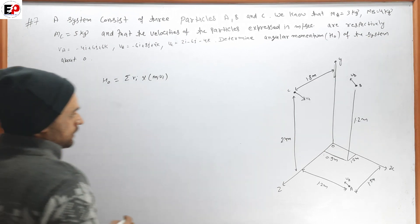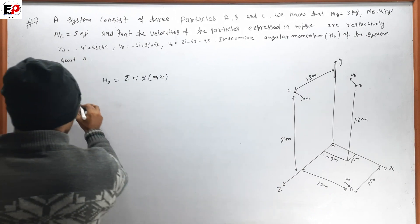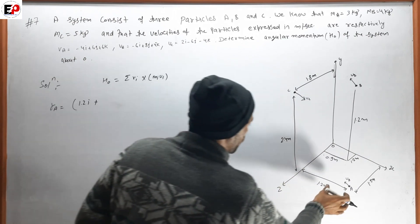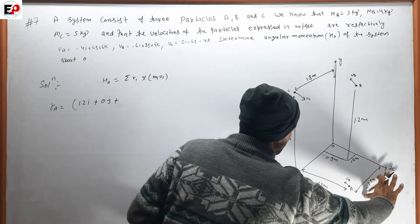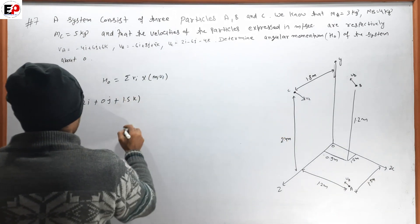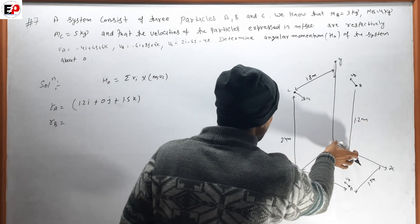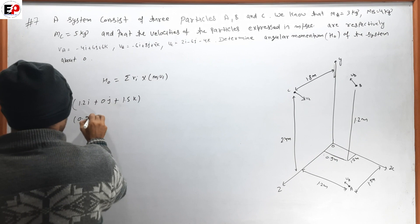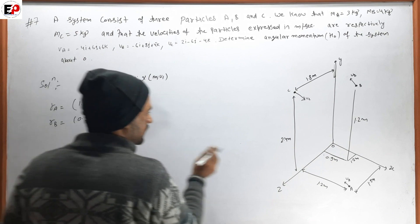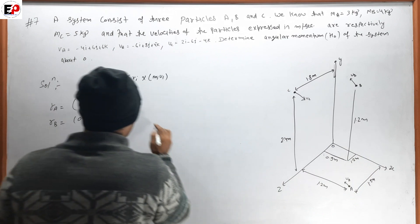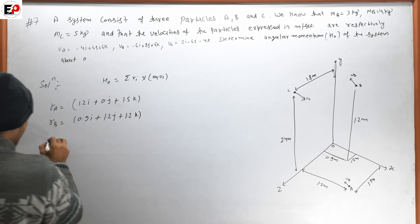Position vector rA is required. rA equals 1.2i plus 0j plus 1.5k. Position vector rB is required. rB equals 0.9i plus 1.2j plus 1.2k.